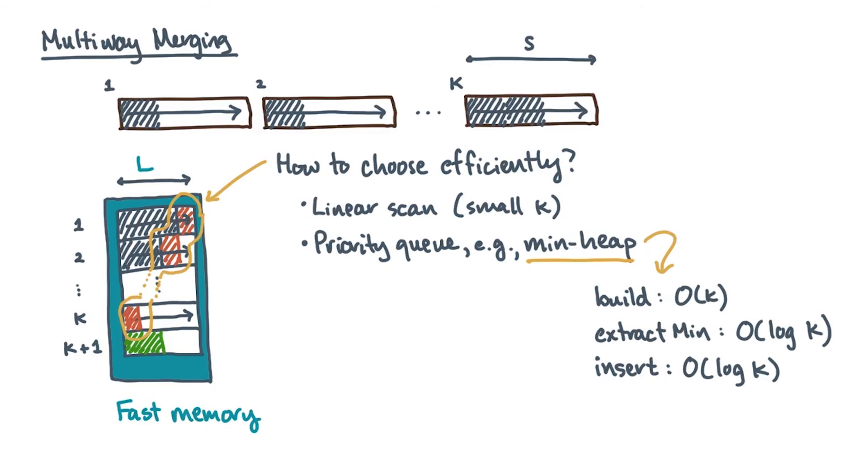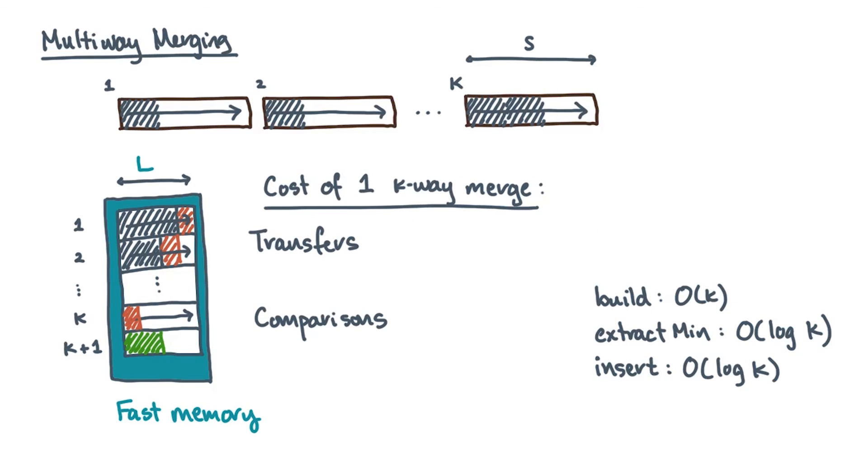Now, assuming a heap-based implementation, what's the cost of a single K-way merge? Let's start with slow-fast memory transfers. You only ever read distinct input blocks once, and you only ever write distinct output blocks once. So that's two KS over L block reads and writes. What about comparisons?